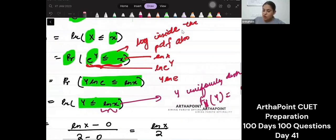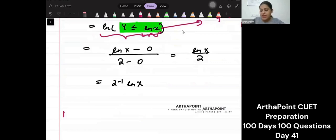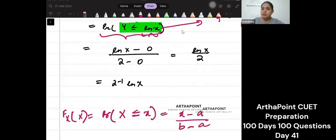So here I have gone ahead and simply used the property of a uniform distribution that when x was uniformly distributed and I had to find this it was simply x minus a upon b minus a. Here y is uniformly distributed between 0 to 2. So I know a and I know b and instead of y here this is this part ln x. So I have just used that here.